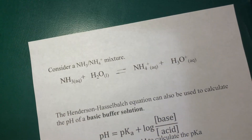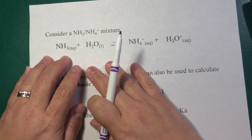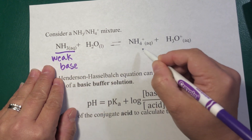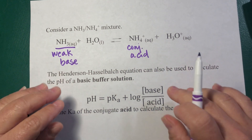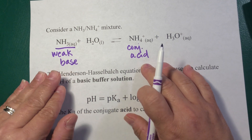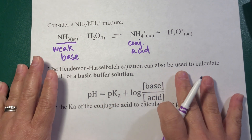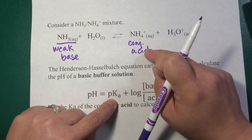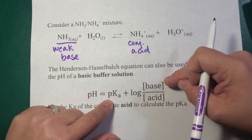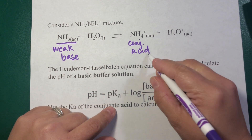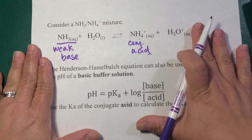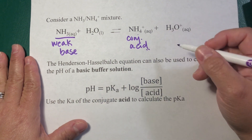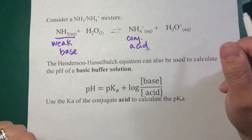Remember that all of this also applies to a weak base with its conjugate acid. In that reaction, the weak base and conjugate acid form the buffer pair. You can use Henderson-Hasselbalch to calculate the pH — the equation stays exactly the same: pH = pKa + log([base]/[acid]). The important thing is to use the Ka of the conjugate acid, not a Kb. We never use Kb here. There is a problem with this pair in your worksheet, and I'll go over it in the next video.